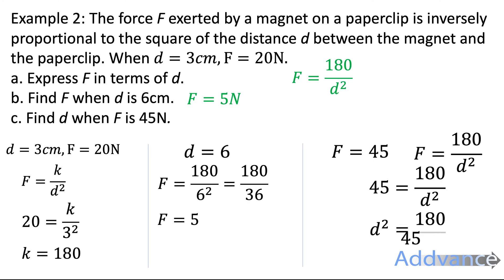And we get d squared equals 180 divided by 45, which on your calculator gives you 4. So therefore d squared equals 4. We square root both sides and we get d is equal to 2. Because the opposite of squaring is square root. We square root both sides, we get square root of 4 is 2.